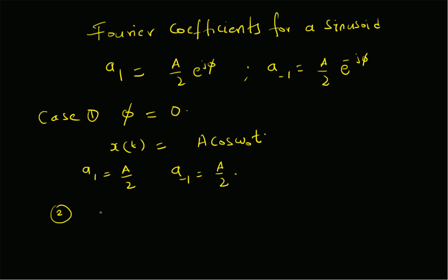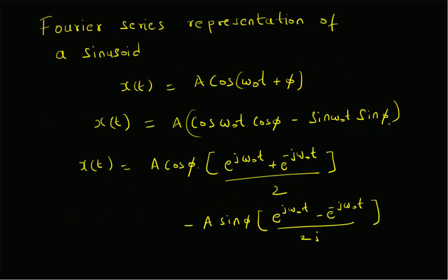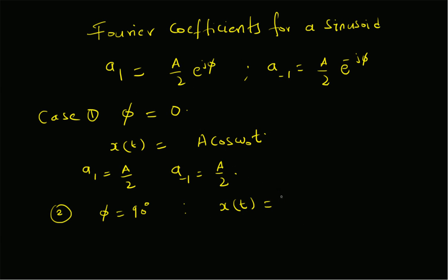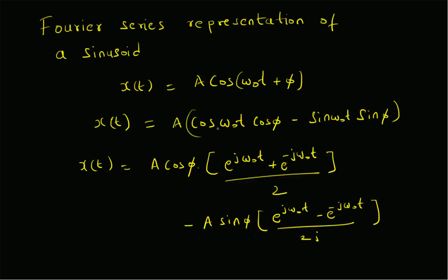The second special case is φ = 90°. In that case, x(t) becomes -A·sin(ω₀t), since the cosine term vanishes. The corresponding Fourier coefficients are a₁ = A/(2j) = j·(A/2) and a₋₁ = -A/(2j) = -j·(A/2), which is the conjugate of a₁.